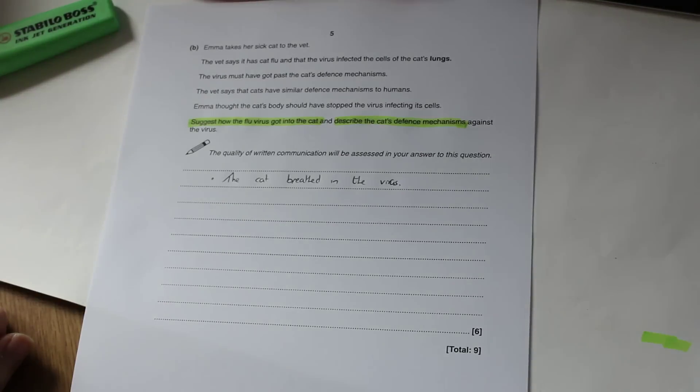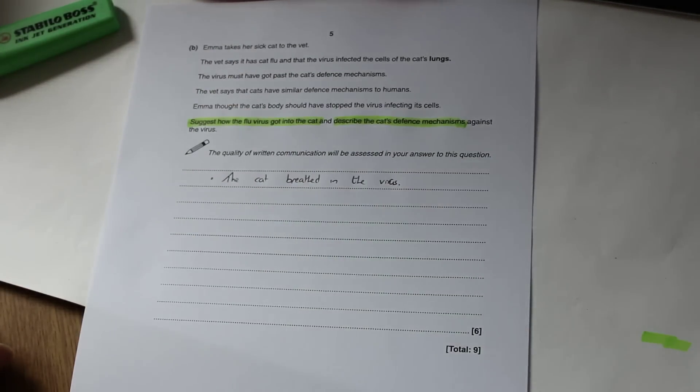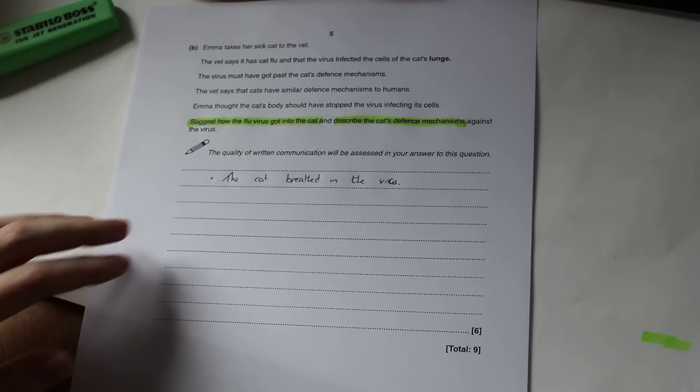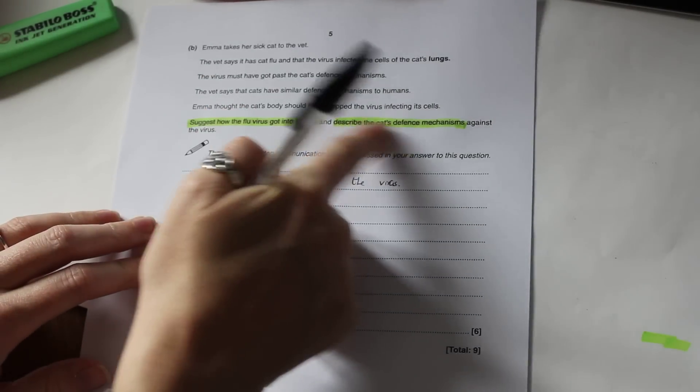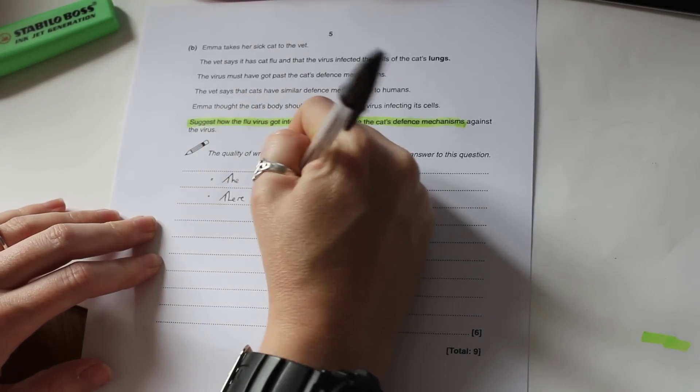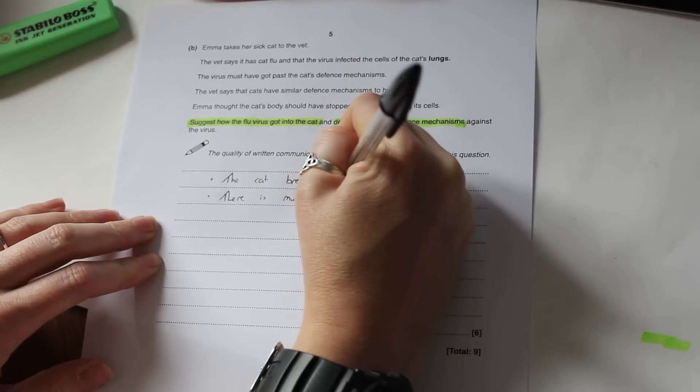Now second thing we've got to do then is describe the cat's defense mechanisms then. So because we're breathing things in hopefully we remember that in the respiratory system then we do have this mucus that lines the airways. And the way that that actually is going to help then is it's going to trap the bacteria or the viruses that we're trying to breathe in. So the next thing we can say is talking about the defense mechanisms. So there is mucus that lines the airways.